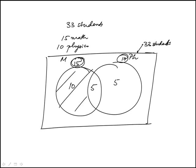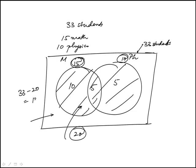So if you just add these regions, that's a total of 20. The question is, how many students are not enrolled in either a mathematics course or a physics course, which is this outside, and that would be 33 minus 20, or 13.